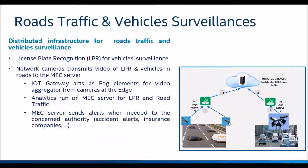Cameras can be easily connected to an IoT gateway. The IoT gateway, which is proximate to the cameras, continuously collects video feeds and sends them to the MEC server in its region — either the whole video feed, after aggregation, or after running some analytics locally. The IoT gateway can then send the results of the analytics to the MEC server. Analytics can include license plate recognition and road traffic density measurement, all happening in a smooth and automated way.